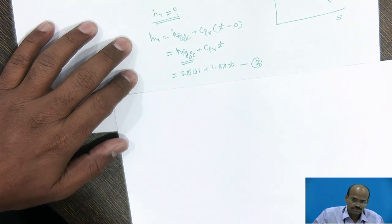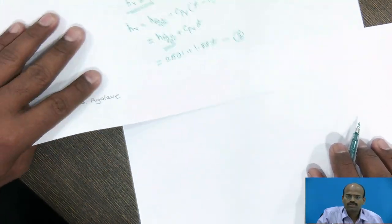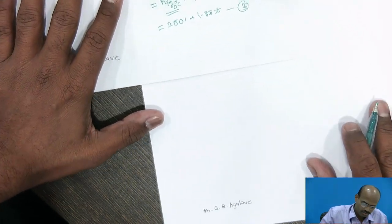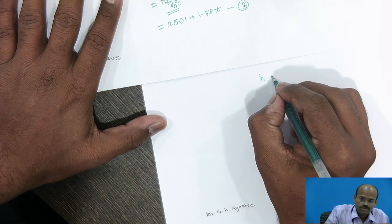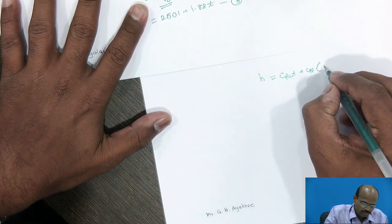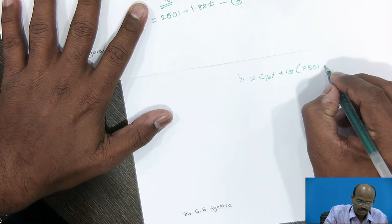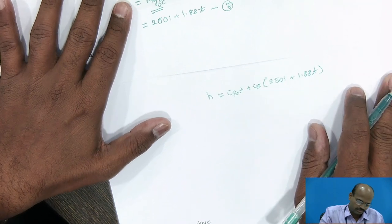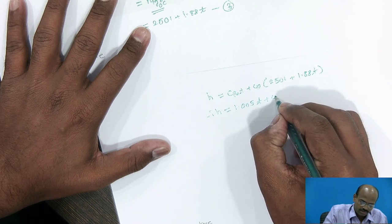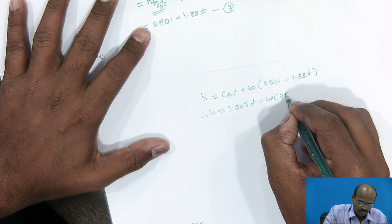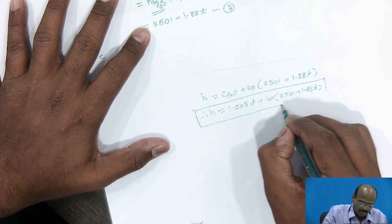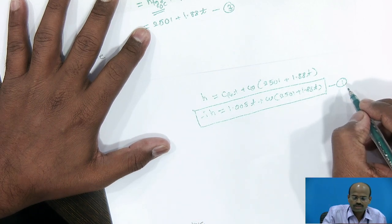Then, I should substitute the values of Ha and Hv in equation number first. So, enthalpy of moisture will be equal to CpA T plus omega into bracket 2501 plus 1.88 T. As CpA is 1.005 T plus specific humidity into bracket 2501 plus 1.88 T. So, this is the derivation of specific enthalpy of moisture.